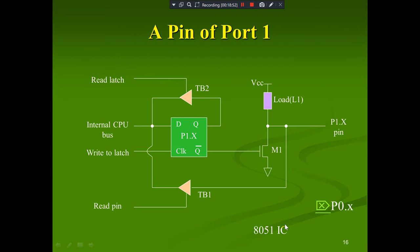The internal circuit of Port 1 pins uses a D latch. The D latch output goes to the internal CPU bus. A clock signal is used for write-to-latch operations. There is a read pin and VCC supply. The port pin is embedded on the 8051 chip and includes a transistor (FET) with an internal load resistor L1. This D latch configuration is used for the I/O port operation.